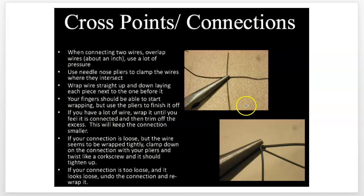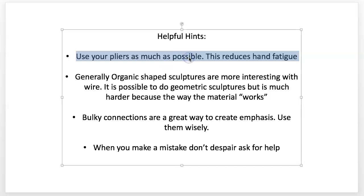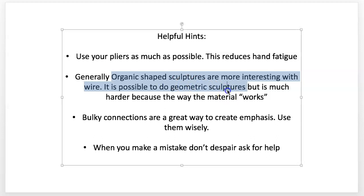When your wire goes like this, you're going to give yourself a little loop somewhere and tighten it up — that's a good way to work. I'll do some demonstration videos. Use your pliers as much as possible — you're going to have hand fatigue if you try to do this all by hand. Generally, organic shape sculptures are more interesting — they work better than geometric ones because it's easier to make the material feel lifelike with non-machine-made organic things. It's pretty hard to make it really exact in a rectangular sort of way.